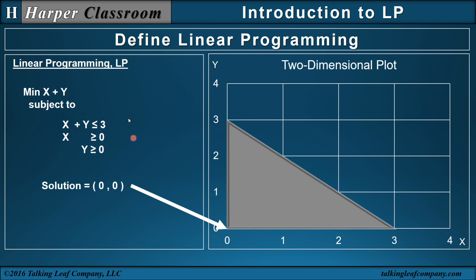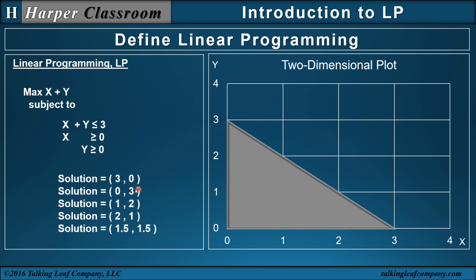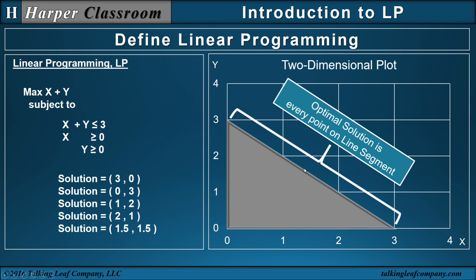So I've had three LPs and three solutions. Let me change this very slightly — keep x plus y but change this min back to a max. What's the solution to this LP? The maximum that x plus y can be — we can see that (3, 0), (0, 3), (1, 2), (2, 1), even (1.5, 1.5) — every point on this line segment is a solution to the LP.